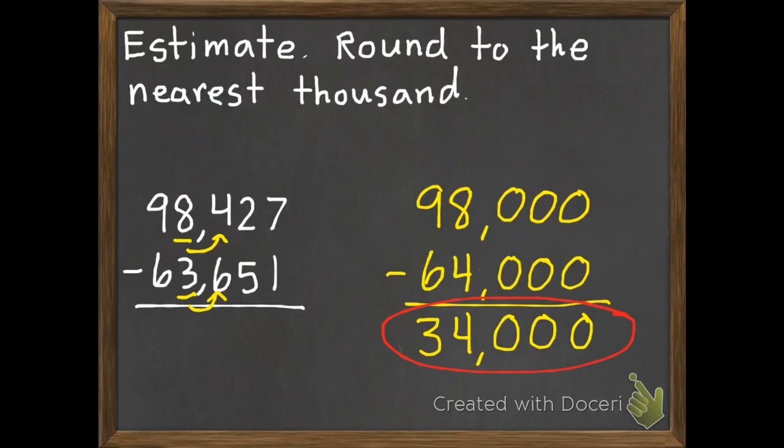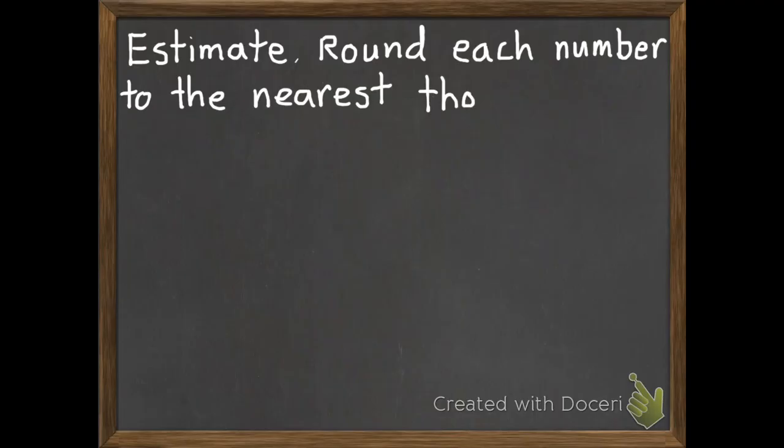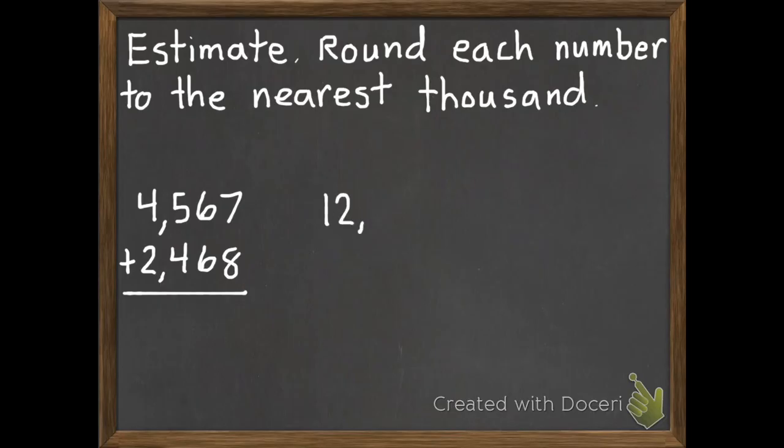So since these are two skills we've already worked on and hopefully you've mastered, I think we're ready to jump in and have you do three practice problems. So estimate, round each number to the nearest thousand. So you're going to have three practice problems.